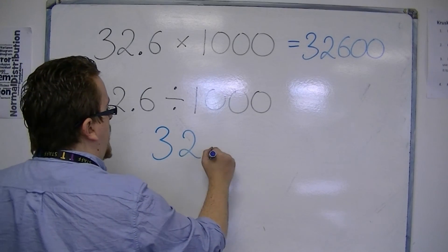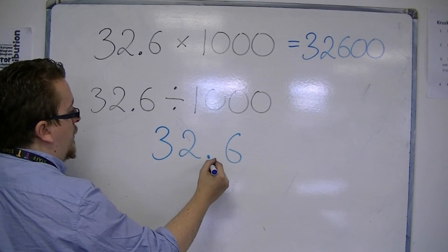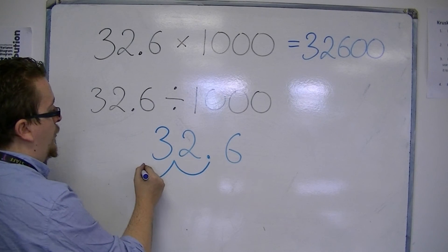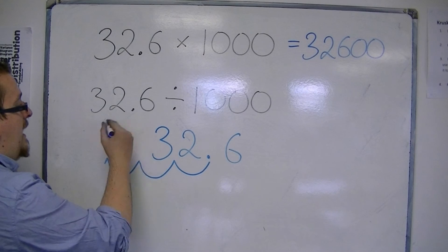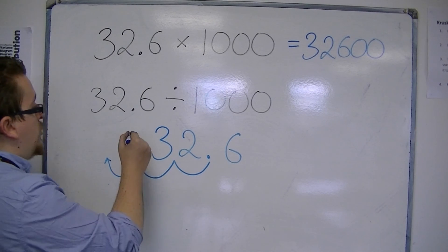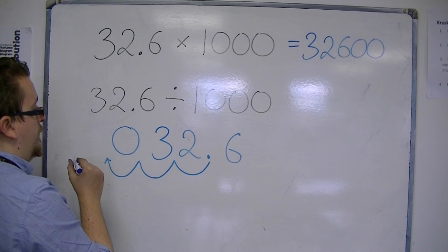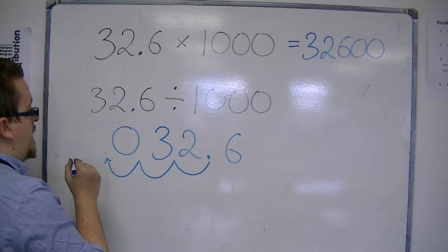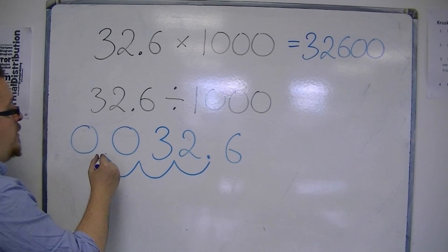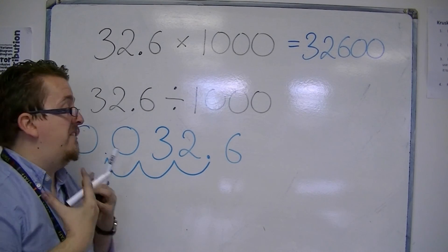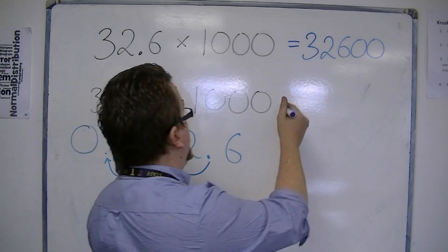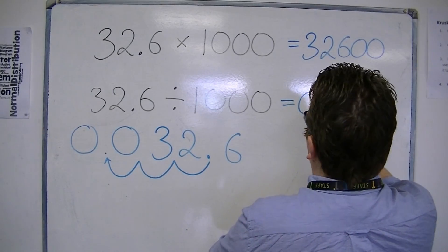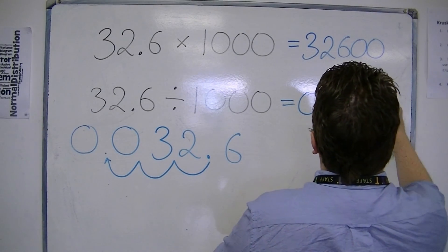So, if I write down 32.6, the decimal point must move one place, two places, three places. So, this is that extra gap, which I must fill in with zero. The decimal point is down there, and so I need to write a zero on the front. So, I can't just have .0326, it must be 0.0326.